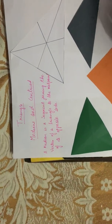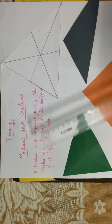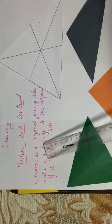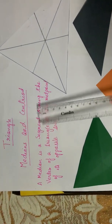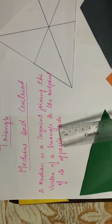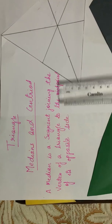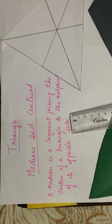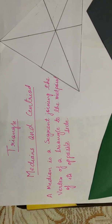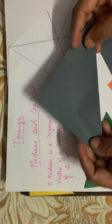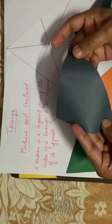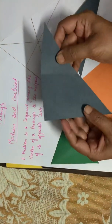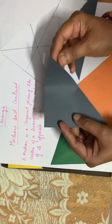First we should know what a median is. A median is a line segment joining the vertex of a triangle to the midpoint of its opposite side. For obtaining the midpoint of a side of a triangle, we will use the paper folding method.